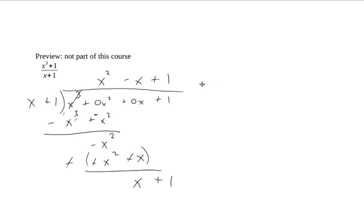Drop down the next value. And I get x plus 1 goes into x plus 1 exactly once. Looks like I didn't actually get a remainder here. If I had had a remainder, this would be my denominator. But this actually gives me x cubed plus 1 over x plus 1 is equal to x squared minus x plus 1.